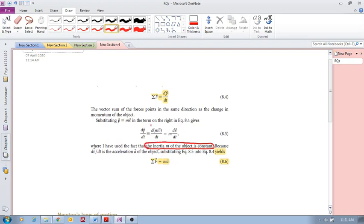So dp/dt becomes d - what is p? That's mv. And as long as our mass is constant we take it out of this derivative and we have m dv/dt, and dv/dt we know is a, our acceleration. So as long as our mass is constant we can convert from there to there.